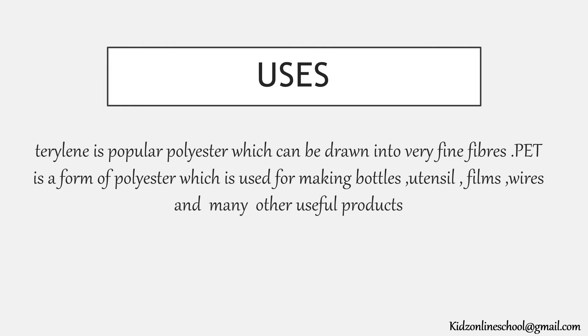Uses of Polyester: Terylene is a popular polyester which can be drawn into very fine fibers. PET is a form of polyester which is used for making bottles, utensils, films, wires and many other useful products.